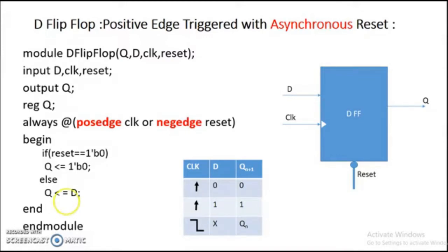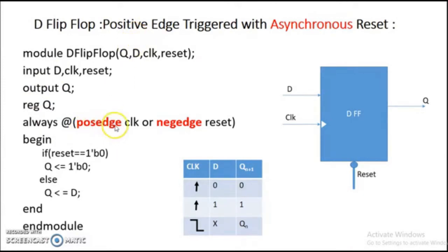If you need to design a negative edge triggered flip-flop instead, only a small change is needed in the design module. You replace posedge clock with negedge clock. Then this always block will execute when the clock makes a negative transition, changing this module to a negative edge triggered D flip-flop.